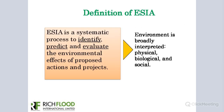ESIA is a systematic process that identifies, predicts, and evaluates the environmental effects of proposed actions and projects. The environmental aspect can further be interpreted as the physical environment, the biological environment, and of course the social environment.